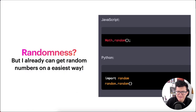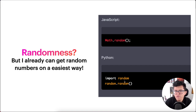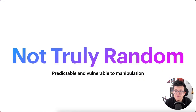Randomness — we can already get a random number the easy way, right? Both in JavaScript, Python, or any other programming language, we can use libraries like Math.random or random.random and get a random number. Why do we need such a complex scheme? Let me tell you: those numbers are not truly random.